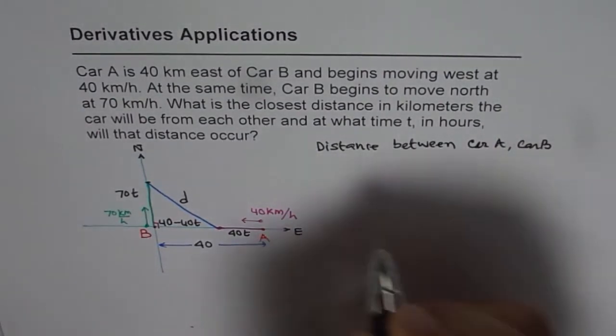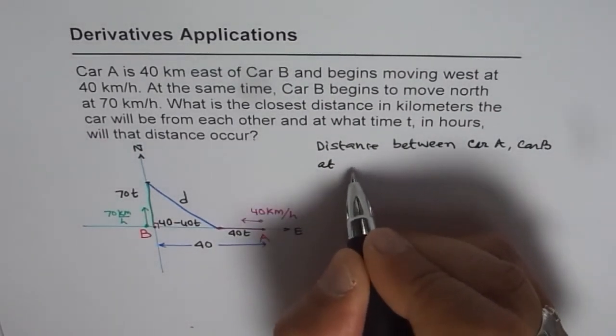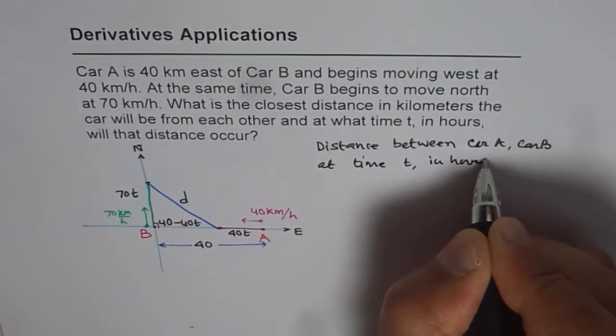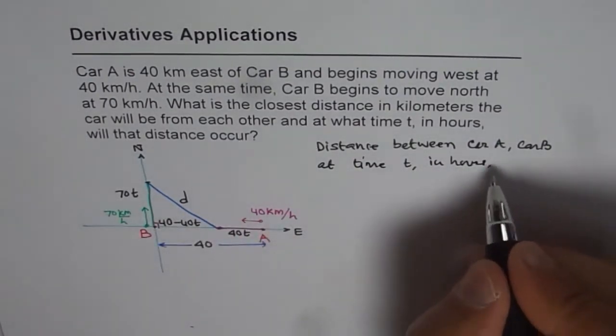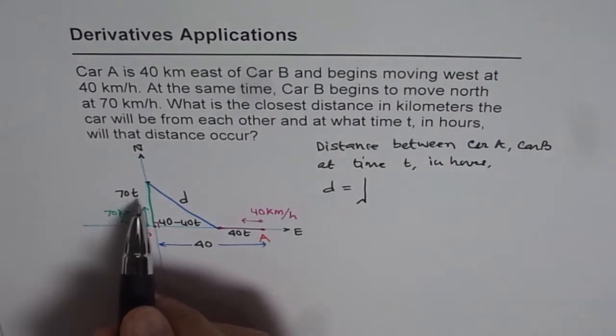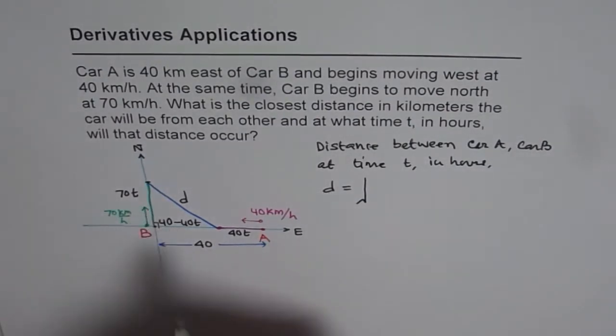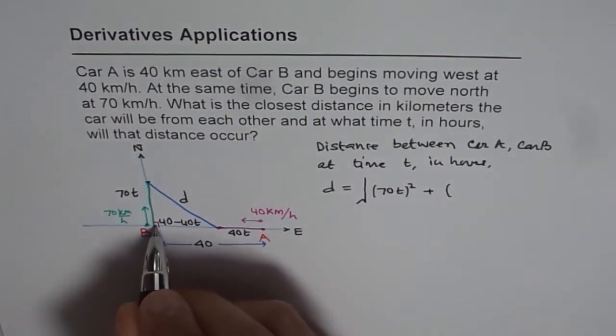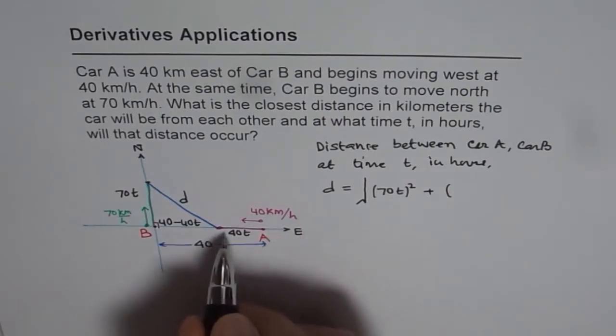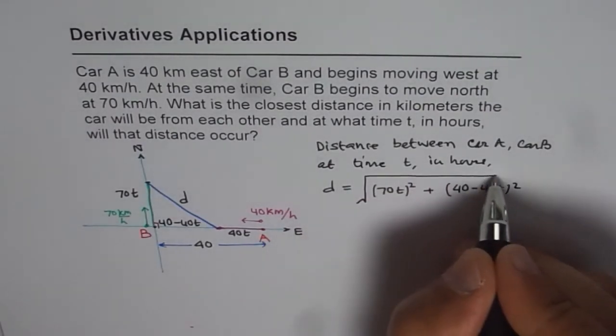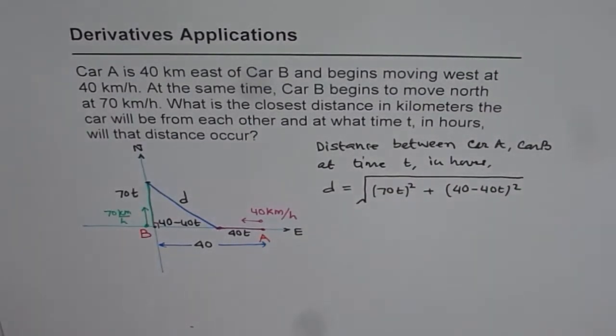So the distance between car A and car B at time T in hours will be how much? Let it be D. So that would be D equals to square root of, we will use Pythagorean theorem, sum of squares of these sides, 70T square, plus this distance. And that is 40 minus 40T whole square. So this is the distance between two cars at any instance of time.